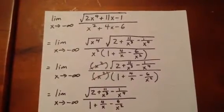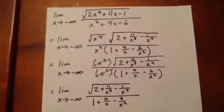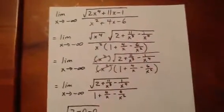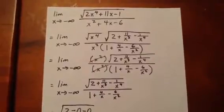In the numerator, we see that we can factor out the square root of x to the 4, leaving us in the second square root with 2 plus 11 over x cubed minus 1 over x to the 4.